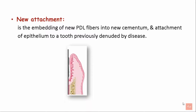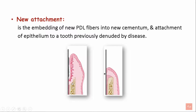This image represents the presence of subgingival calculus leading to formation of a pocket, periodontal ligament loss, and alveolar bone loss. New attachment involves reduction of the pocket and attachment of connective tissue fibers and epithelium onto the previously denuded tooth surface.